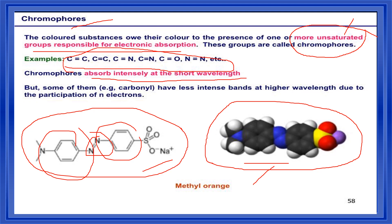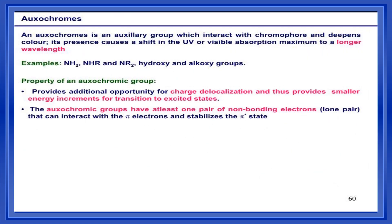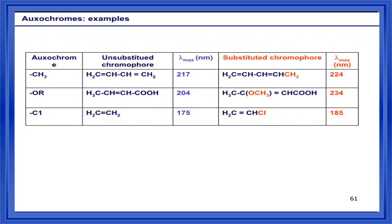Chromophores generally absorb intensity at shorter wavelengths. Some of them, if they contain a carbonyl-type group, have a less intense band — I have explained this. These are some example groups. It is not necessary — and not possible — to memorize each and everything. You should go for the concept rather than mugging all these values.